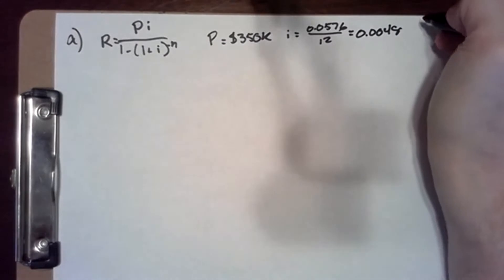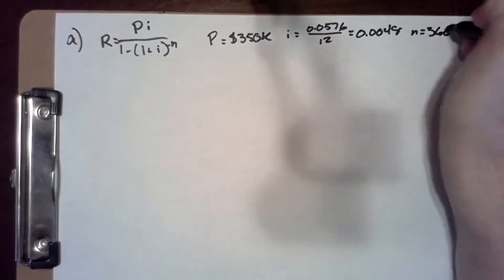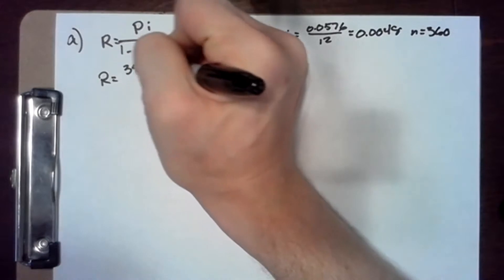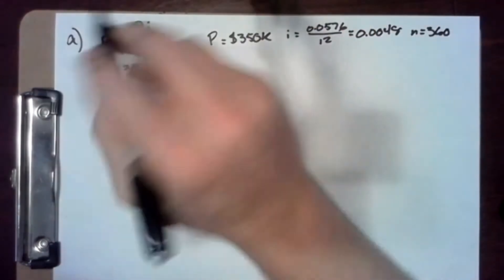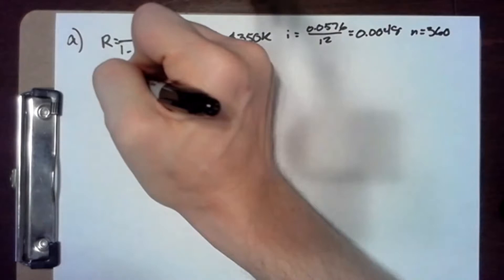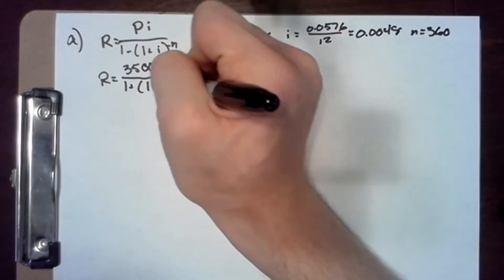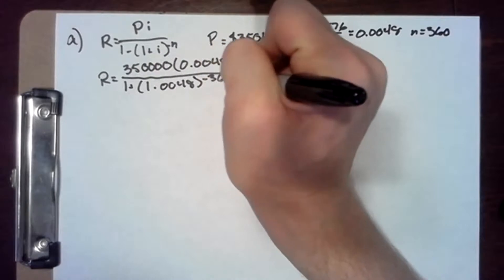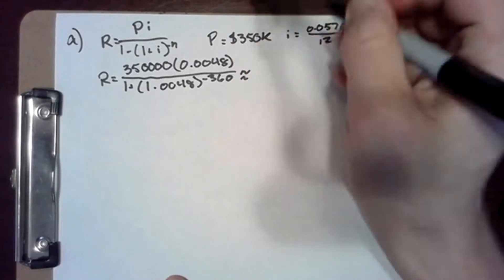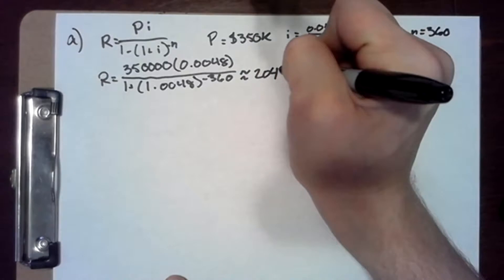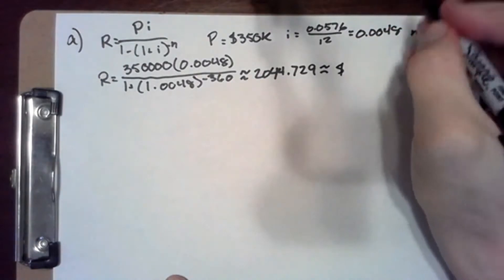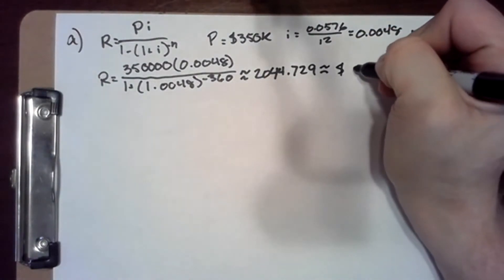And n is 360. So R equals 350,000 times 0.0048 over one minus 1.0048 to the negative 360. Plugging this into a calculator, we get approximately $2,044.729, which is about $2,044.73 for the first five years.